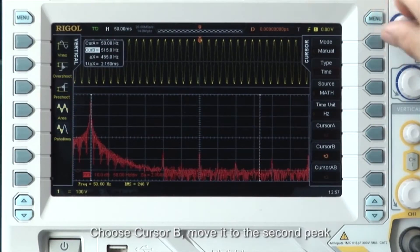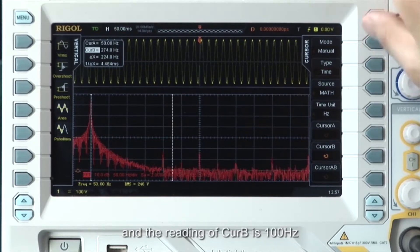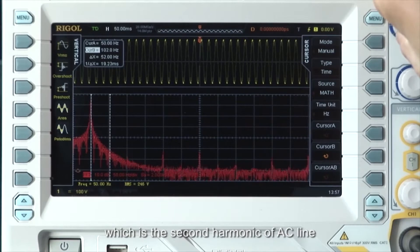Choose cursor B, move it to the second peak. And the reading of cursor B is 100 hertz, which is the second harmonic of the AC line.